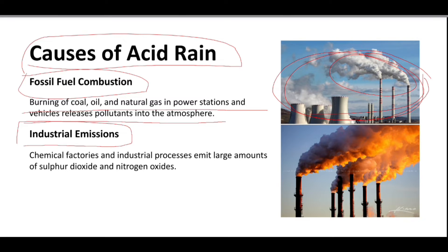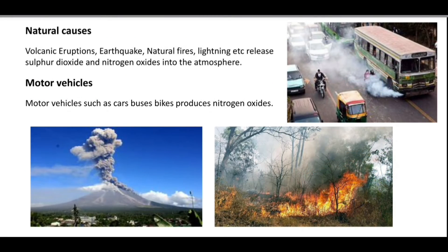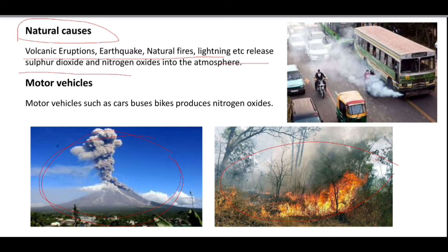The second cause is industrial emissions — chemical factories and industrial processes emit large amounts of sulfur dioxide and nitrogen oxide. The third cause is natural causes such as volcanic eruptions, earthquakes, natural fires, and lightning, which also release sulfur dioxide and nitrogen oxide into the atmosphere.